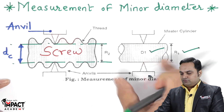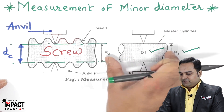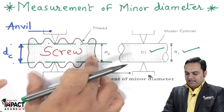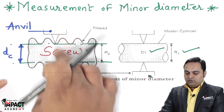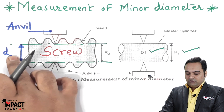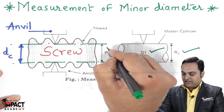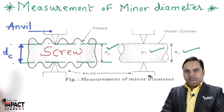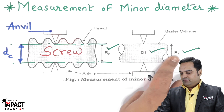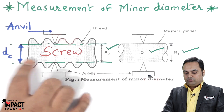The master cylinder is used to set the distances between the anvils. Once setting is done, the master cylinder is replaced by the screw thread, as we can see from the diagram. If it does not fit at the core diameter, a slight adjustment is made because there may be differences between the master cylinder diameter and the core diameter we want to measure. We then obtain another reading, denoted as R2, on the floating carriage micrometer.